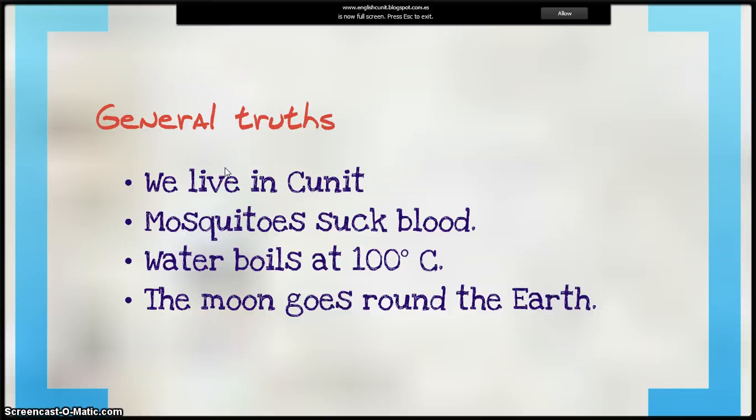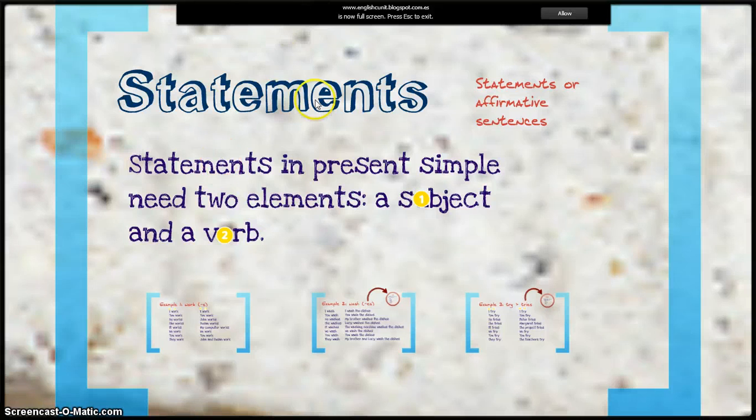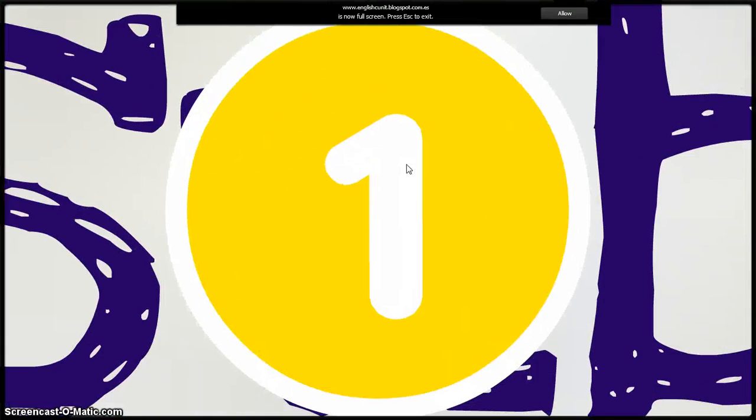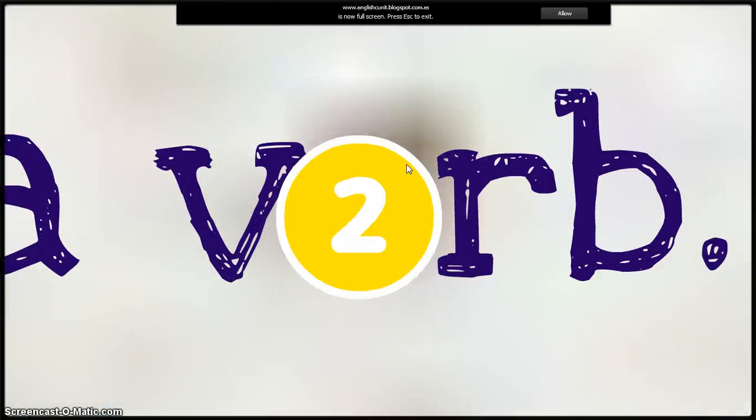Anem a veure com es fa una oració afirmativa. Statements or affirmative sentences. Statements in present simple need two elements. A subject, because remember that all English sentences must have a subject. And the second element is the verb.